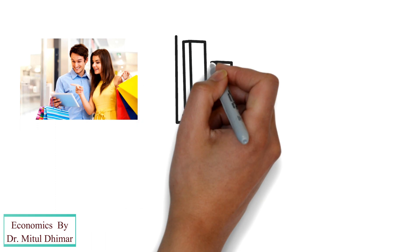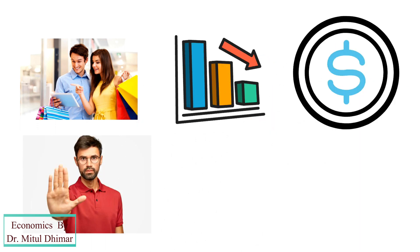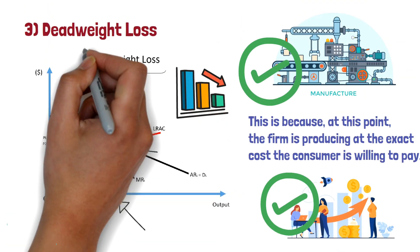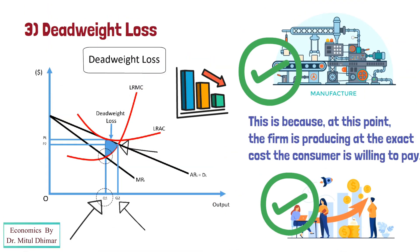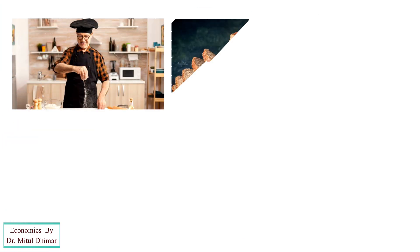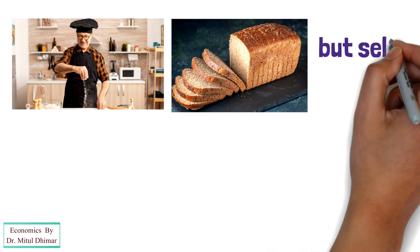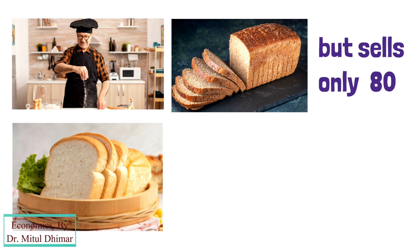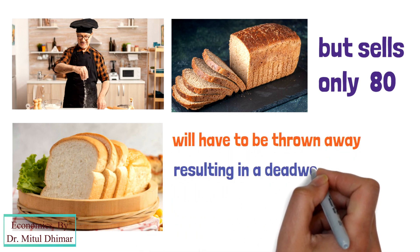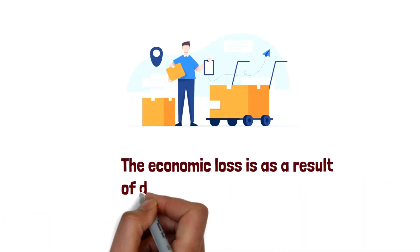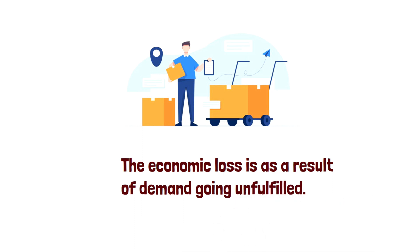However, this means that consumers who would otherwise be willing to pay a lower price are unable to do so because the firm seeks to maximize profits. In turn, this leads to a deadweight loss for society as output is not allocatively efficient. For example, a baker may make 100 loaves of bread but sells only 80 — the 20 remaining loaves will go dry and moldy and will have to be thrown away, resulting in a deadweight loss. When goods are undersupplied, the economic loss is as a result of demand going unfulfilled.